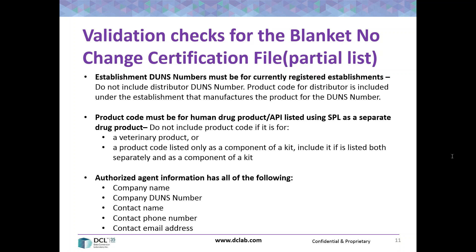Right now you can do drug for further processing as bulk ingredient, but that may be changing — the FDA may be changing those validation rules. Our personal practice for our clients is to automatically set it to drug for further processing as both the document type and document category.